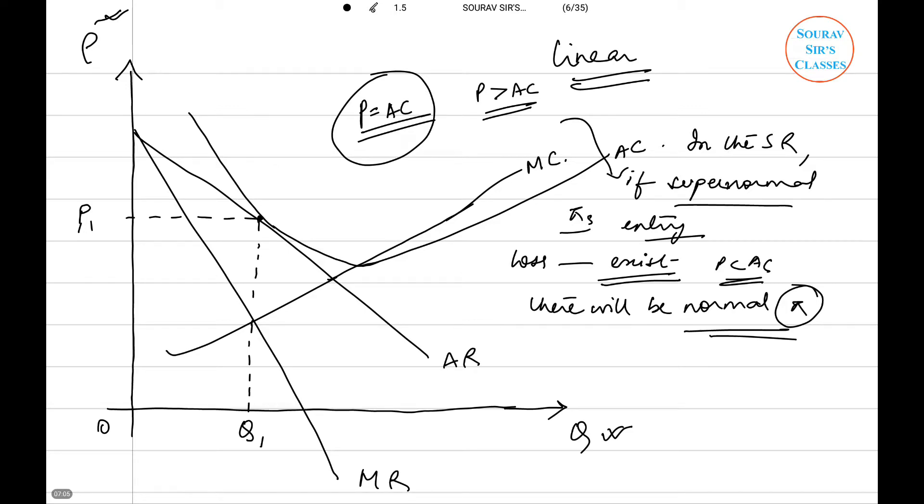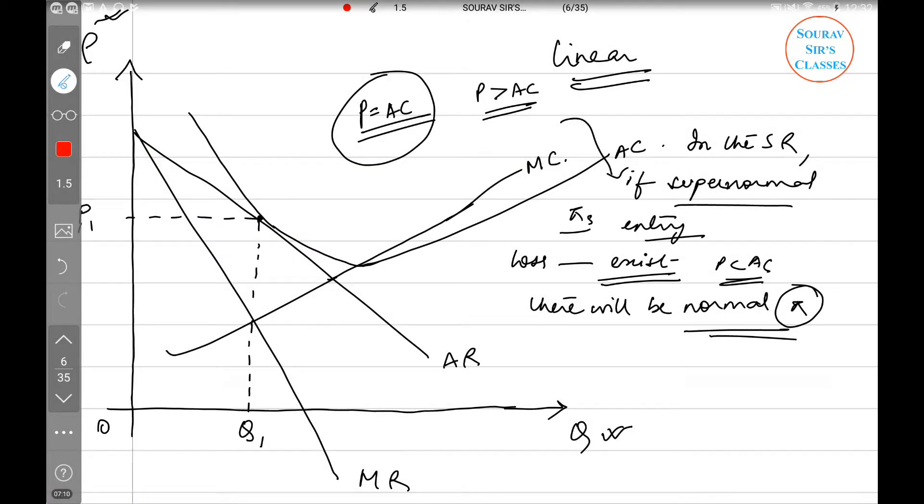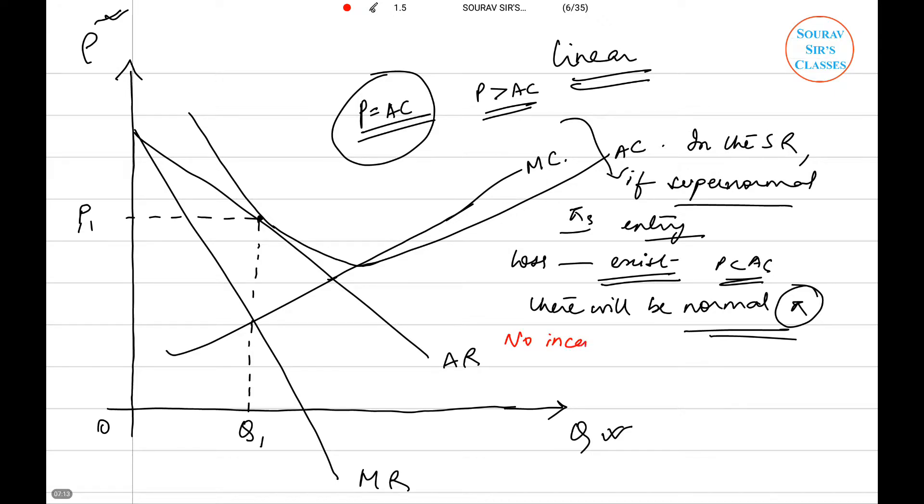In the long run this condition will prevail, and what does this mean? This means there will be no incentive to cut down the price. Why is there no incentive? Because if you cut down the price, say you choose a price lower than P1, say P2, that means you are trying to increase your quantity. You can see that any quantity greater than Q1, marginal cost will be greater than marginal revenue, so that means you are incurring a loss. You will never do this.